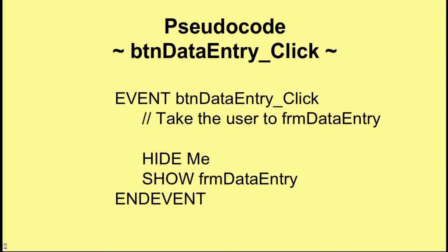When moving from one form to another, you need to hide the form you're on and then show the form you need. So 'hide me' — where 'me' is always the current form — will hide the main menu, and 'show data entry form' will display the data entry form. This little event turns out to be quite simple.